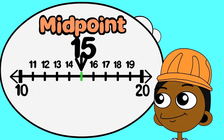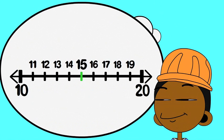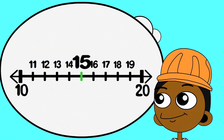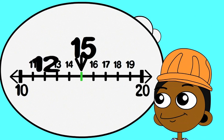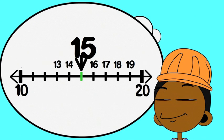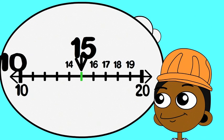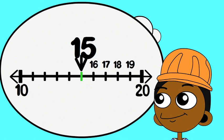If the number you want to round is less than the midpoint, round down. If the number you are rounding is at the midpoint or greater than the midpoint, round up.